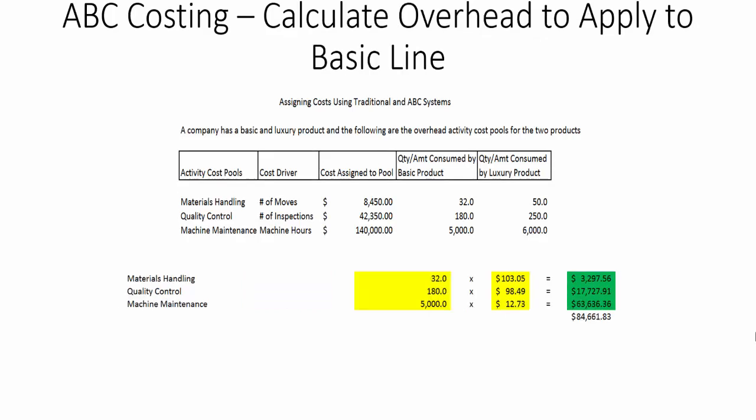Now we take those rates and apply overhead to the basic product line. The basic model takes 32 moves, 180 inspections, and 5,000 machine hours. Each of those is multiplied by the respective rates: 32 moves times $103.05 gives the materials handling allocation; 180 inspections times $98.49 gives the quality control allocation; and the same logic follows for machine maintenance.